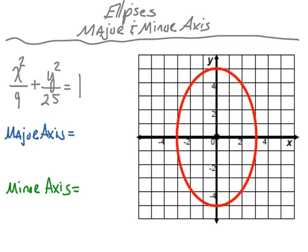In this video we'll be looking at ellipses — more specifically, something called the major and the minor axes.